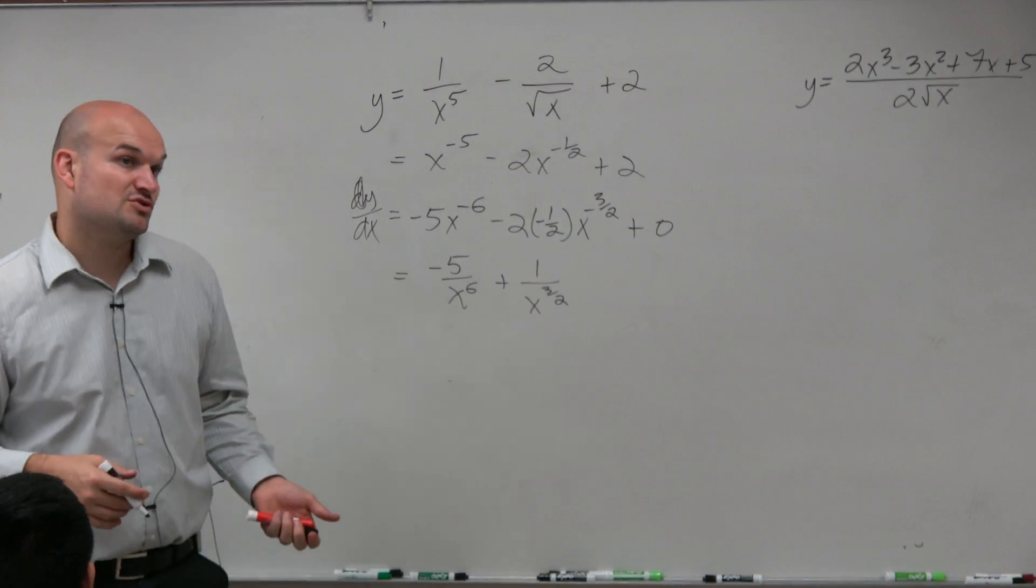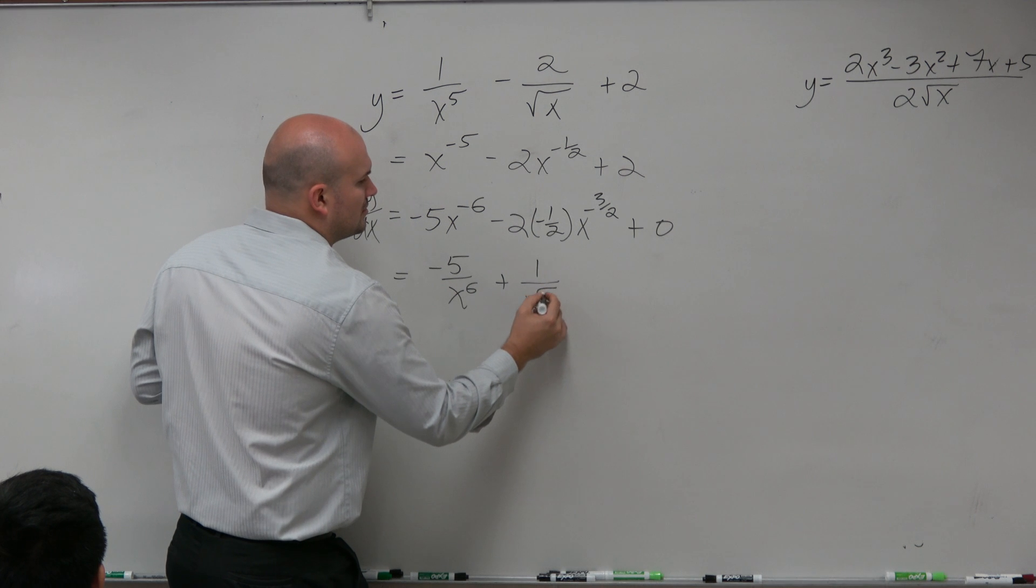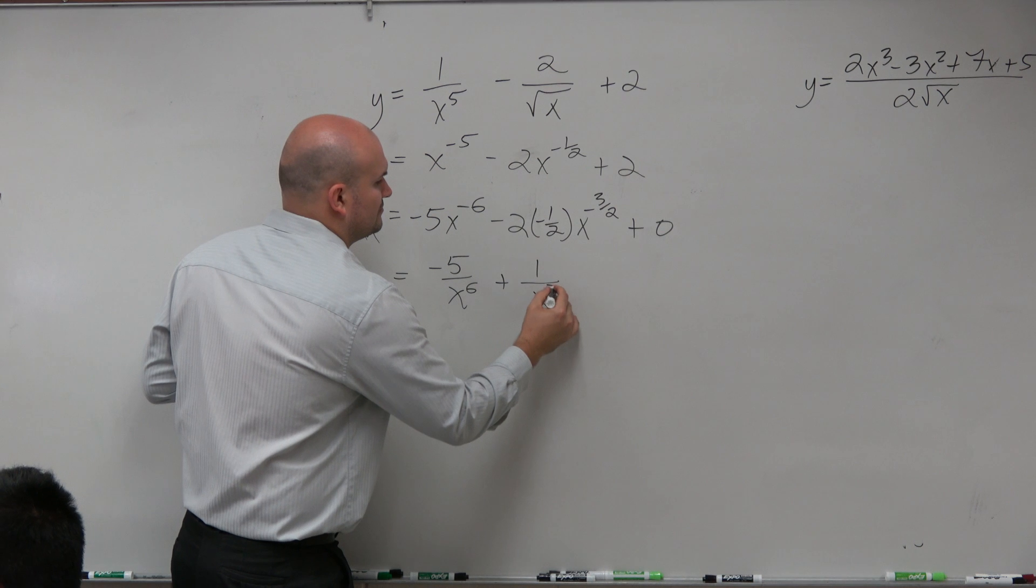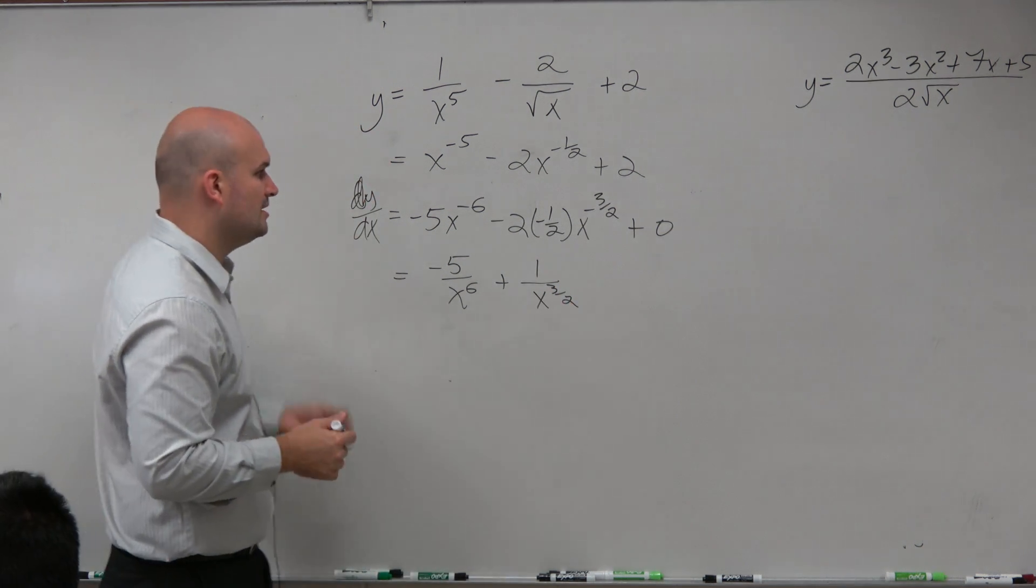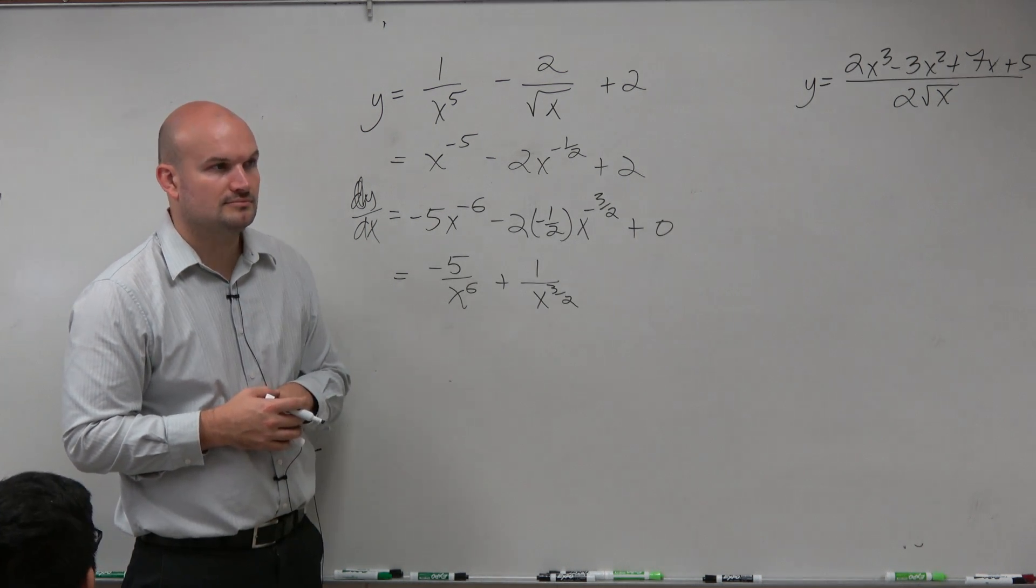Which is also the same thing as the square root of X cubed, which is usually preferred. But it's OK if you leave it. Actually, you know what? I'm just going to leave it as a rational power. Just know that that could be the square root of X cubed. And actually, that's it. Done. OK?